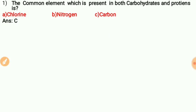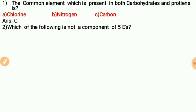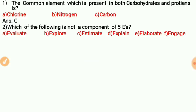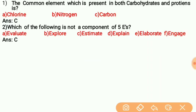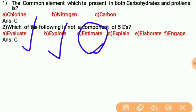Question two: Which of the following is NOT a component of the 5 E's? The options are: evaluate, explore, estimate, explain, elaborate, and engage. The correct answer is C — estimate. Estimate is not part of the 5 E's; the rest — evaluate, explore, explain, elaborate, and engage — are all components.